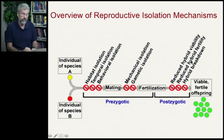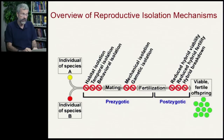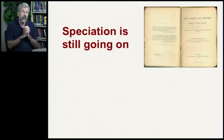If none of these reproductive isolation mechanisms work, you could have the mixture of two different gene pools producing viable fertile offspring — and then those would not be properly separate species. So one of these mechanisms is likely operating in every case to prevent one species from blurring into another.